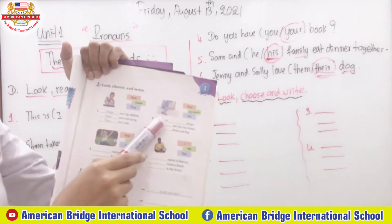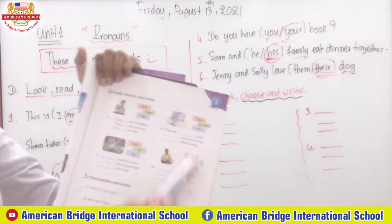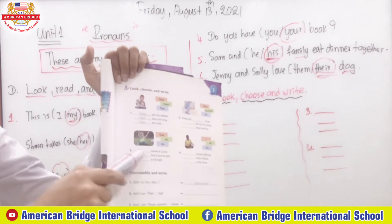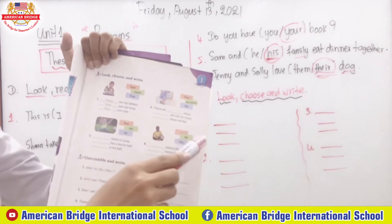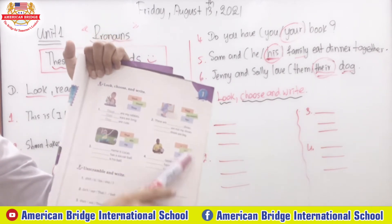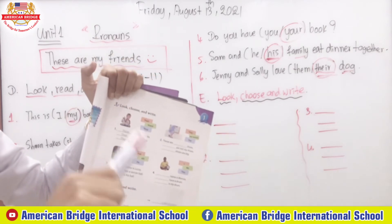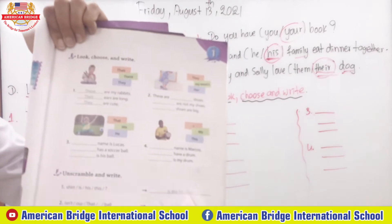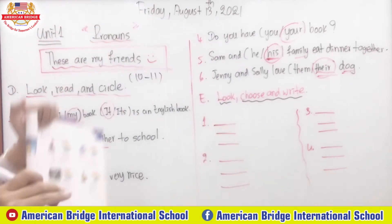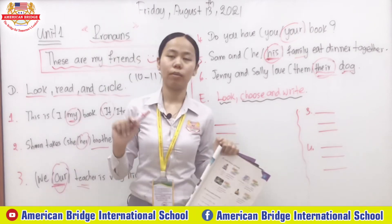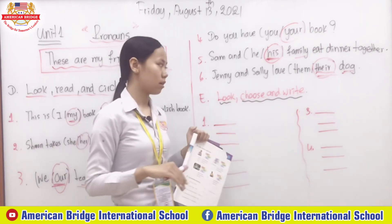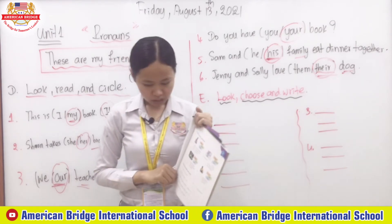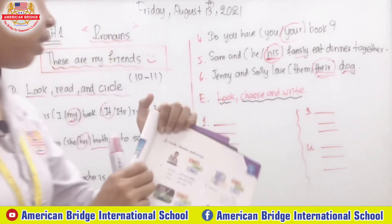For number two, choose from 'they,' 'my mom's,' or 'her.' For number three, choose from 'that,' 'his,' or 'he.' For number four, choose from 'I,' 'my,' or 'this' to complete each statement. There are four parts. Please work on this for around four minutes and then we'll check answers together. Let's go.